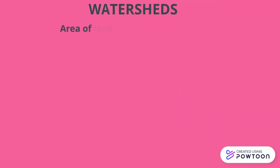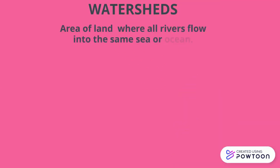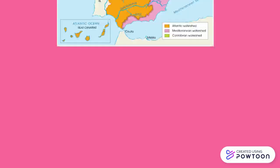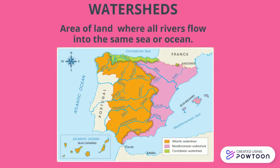Watersheds. A watershed is an area of land where all rivers flow into the same sea or ocean. Here is a map of Spain with the three different watersheds.